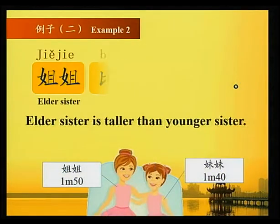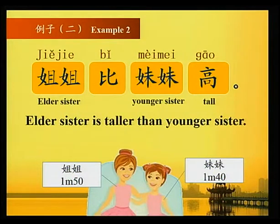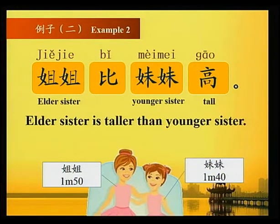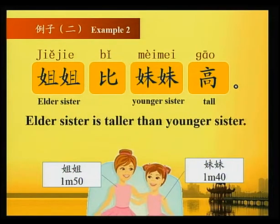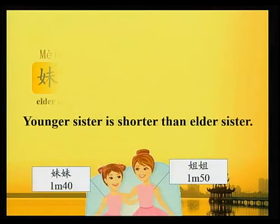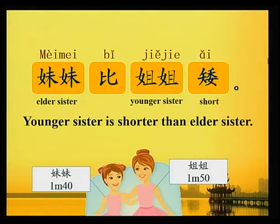例子二 Example two: 姐姐一米五，妹妹一米四，所以 姐姐比妹妹高 — elder sister is taller than younger sister. 妹妹比姐姐矮 — younger sister is shorter than elder sister.